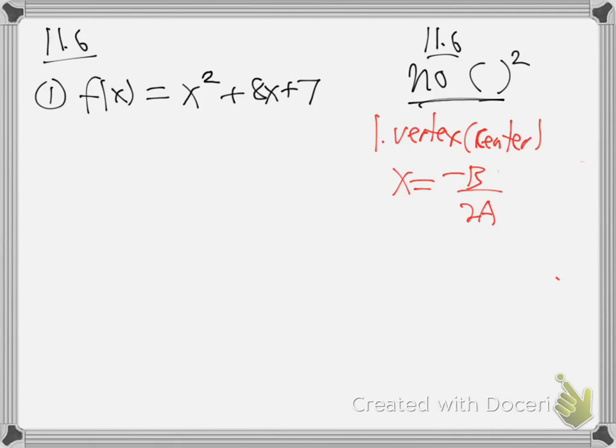What do I mean, negative b over 2a? Let's do it. What do you think b and a are? What they always are when you do the quadratic. What's a? What's the number in the front? 1. And what's b? 8. Just like they always are - same thing as always.